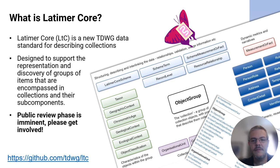Before we go any further, I should briefly mention what Latimer Core is for the uninitiated. It's a new TDWG data standard designed to support the representation and discovery of collections at the group level, rather than the more granular level of individual objects or specimens. There's not really enough time to go into detail today, but there is a wealth of information online — please do look at our GitHub repository, linked at the bottom of the slide. The standard is lined up to go out for public review shortly after this week's conference, so I'd urge anyone interested to keep an eye out for that and to get involved.